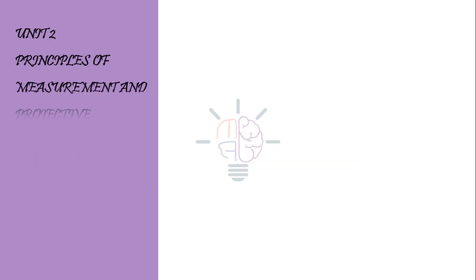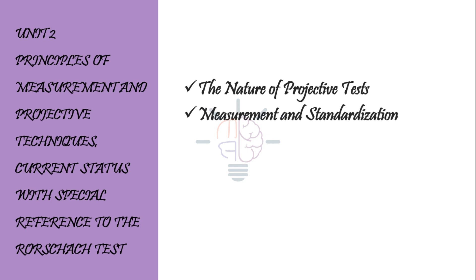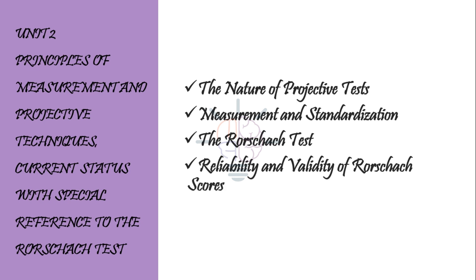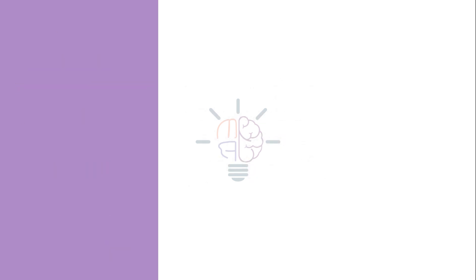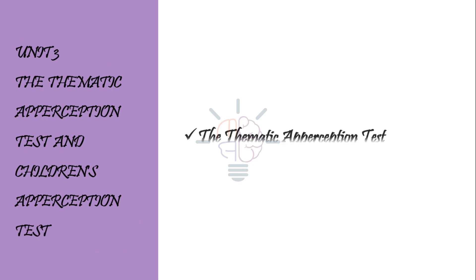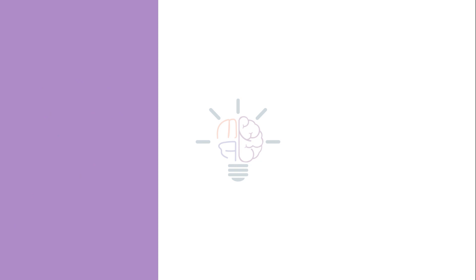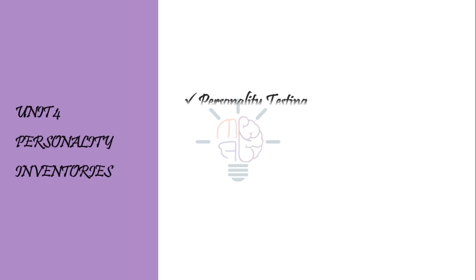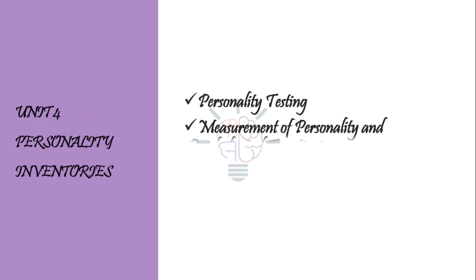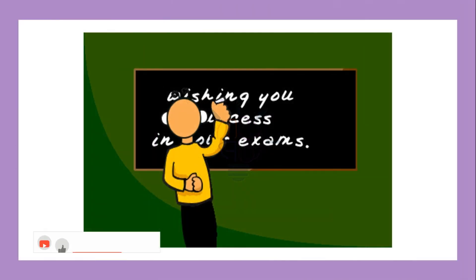From Unit 2: the nature of projective tests, measurement and standardization, the Rorschach test, and reliability and validity of Rorschach test scores. From Unit 3, only one topic: the Thematic Apperception Test (TAT). From Unit 4: personality testing, measurement of personality and psychological functioning, and other objective tests.